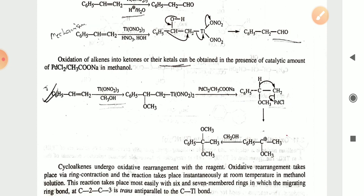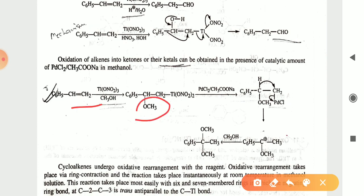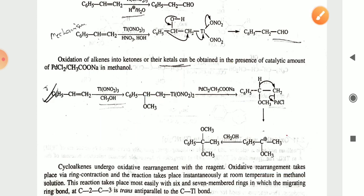For oxidation of an alkene into a ketone, ketals can be obtained in the presence of a catalytic amount of PdCl2 and CH3COONa in methanol. The C=C double bond breaks, the OCH3 group attaches to one carbon and another group to the second carbon; in the presence of PdCl2 and CH3COONa it gives the ketone as final product.